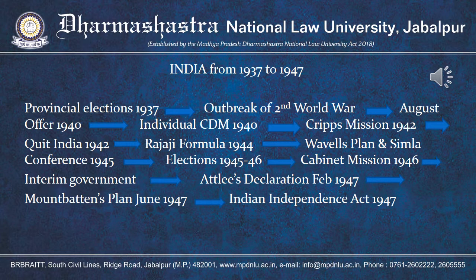The provincial elections in 1937 resulted in the formation of Congress governments in 7 out of 11 provinces. These Congress ministries were functioning effectively in their given provinces. But after the outbreak of the Second World War, the Indian government, without consulting the ministries, dragged India into the war. That resulted in a lot of negotiations between the British government and the Indian National Congress on one hand, and the Muslim League on the other. So let us start with the provincial elections.